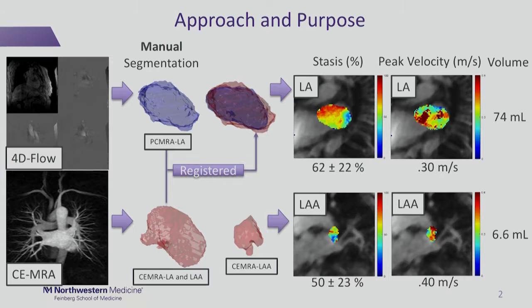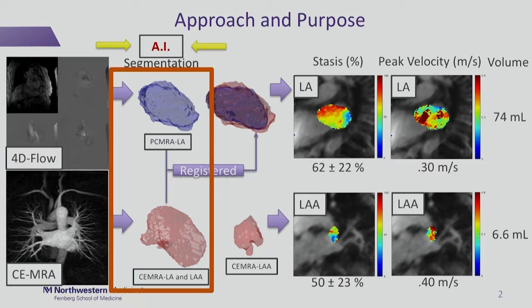So the purpose of this study was to try and use an AI to do these segmentations for both the 4D flow left atrium and the contrast-enhanced left atrium and atrial appendage, which we did using our convolutional neural network architecture.